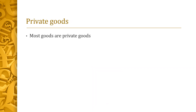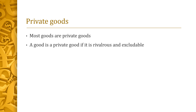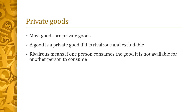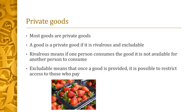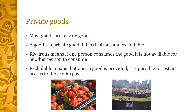Most goods are private goods. A good is a private good if it is rivalrous and excludable. Rivalrous means if one person consumes the good, it is not available for another person to consume. So each punnet of strawberries here, if consumed by one person, cannot be consumed by someone else. Excludable means that once a good is provided, it is possible to restrict access to those who pay. When concerts are put on in big parks in the middle of a city, fences are erected so that they can restrict access to just those people who have tickets.